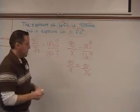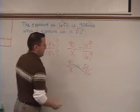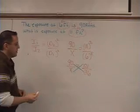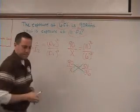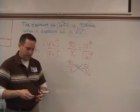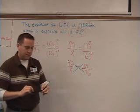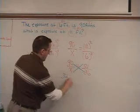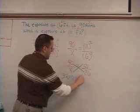Now the next thing to do is cross multiply, we're going to take the top number here times the bottom number there, and this top number times that bottom number. So we're basically saying 90 times 36, and 121 times X. So with the calculator, 90 times 36 equals 3,240, and that's equal to 121 times X.